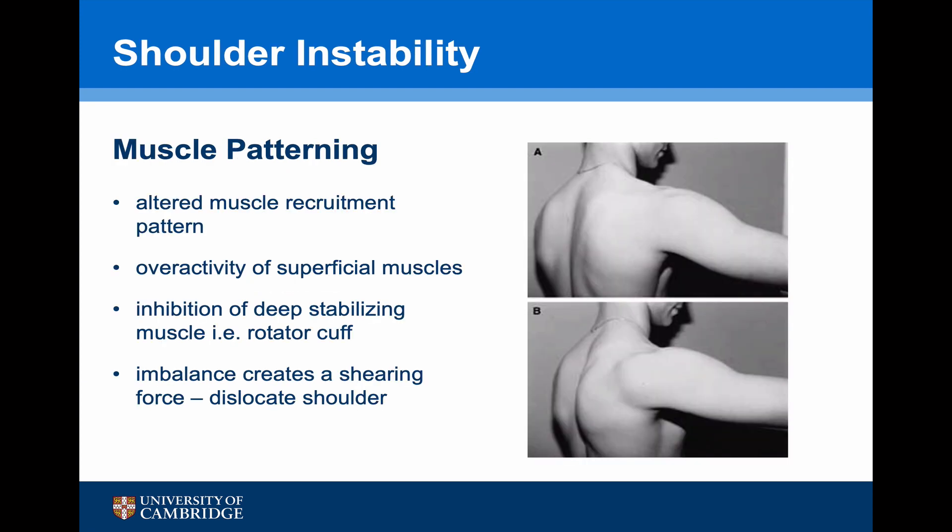However, this model did not cover all types of instability, and more recently we've realized there's a third component to shoulder stability, known as muscle patterning. Muscle patterning takes into account not only the dynamic stabilizers of the shoulder but also the superficial muscles that move the shoulder. In muscle patterning there is an altered muscle recruitment pattern, with overactivity of the superficial muscles — often the pectoralis major or latissimus dorsi — with a corresponding inhibition of the deep stabilizing muscles of the rotator cuff.